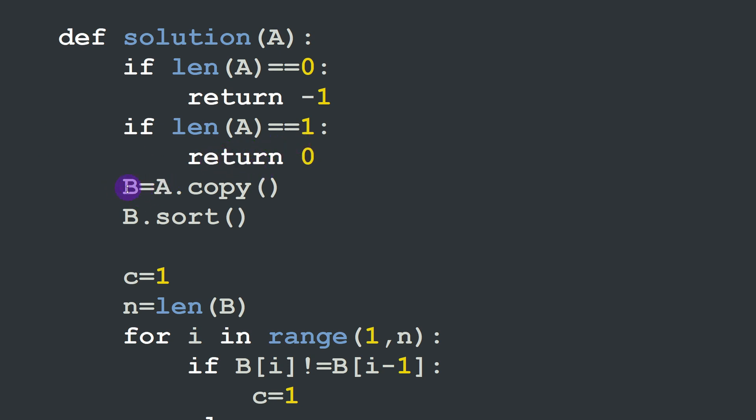Then we define a new list B that is equal to A.copy. It's very important to put .copy here. If you put B equal to A and then you sort B, you are going to sort A at the same time. Why? Because you are giving to the same element or the same set of elements two different names, one is B and the other is A. Just to have a copy of A you have to specify that it's a copy of A using the .copy function.